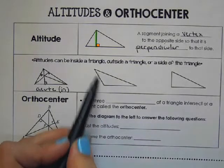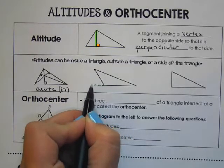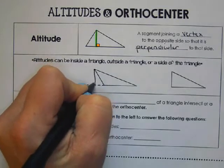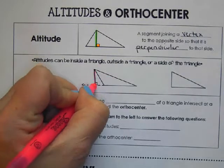In an obtuse triangle, however, if I started to go from perpendicular, I'd have to extend this side a little bit and go perpendicular. So that would mean it's outside, and that's an obtuse triangle.